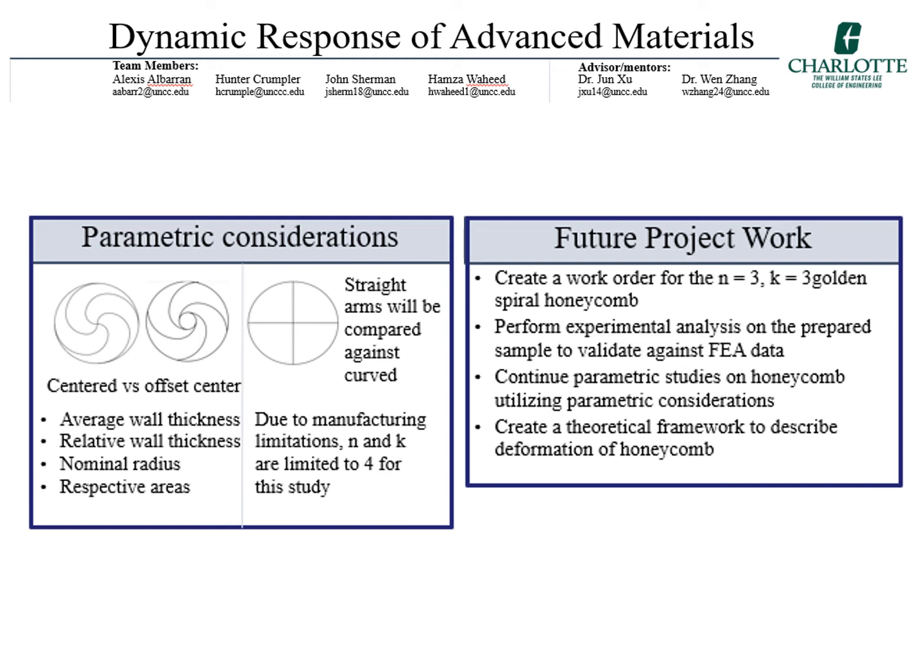For the future of the project, due to the complex decoupling mechanisms and modeling problems with ball and socket design, its priority will be reduced to following the completion of the parametric studies of the golden spiral. A work order will be placed on the golden spiral structure and the prototype will be used to validate the FE models. Additional parametric studies will be continued and theoretical analysis will be begun to describe the golden spiral.